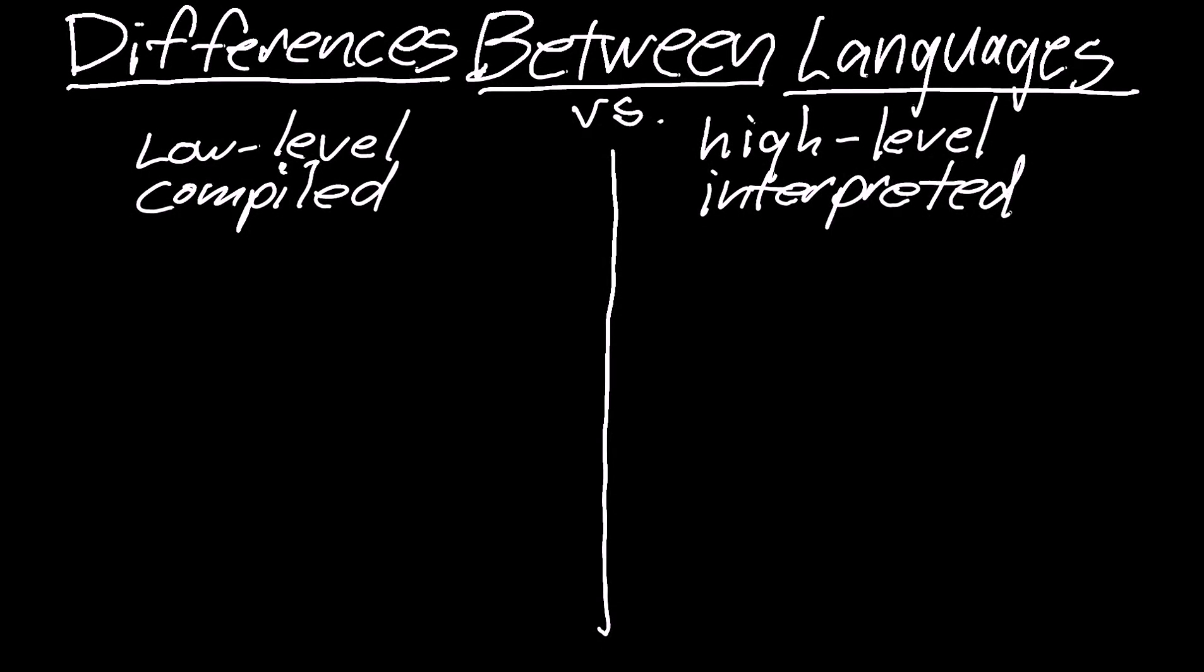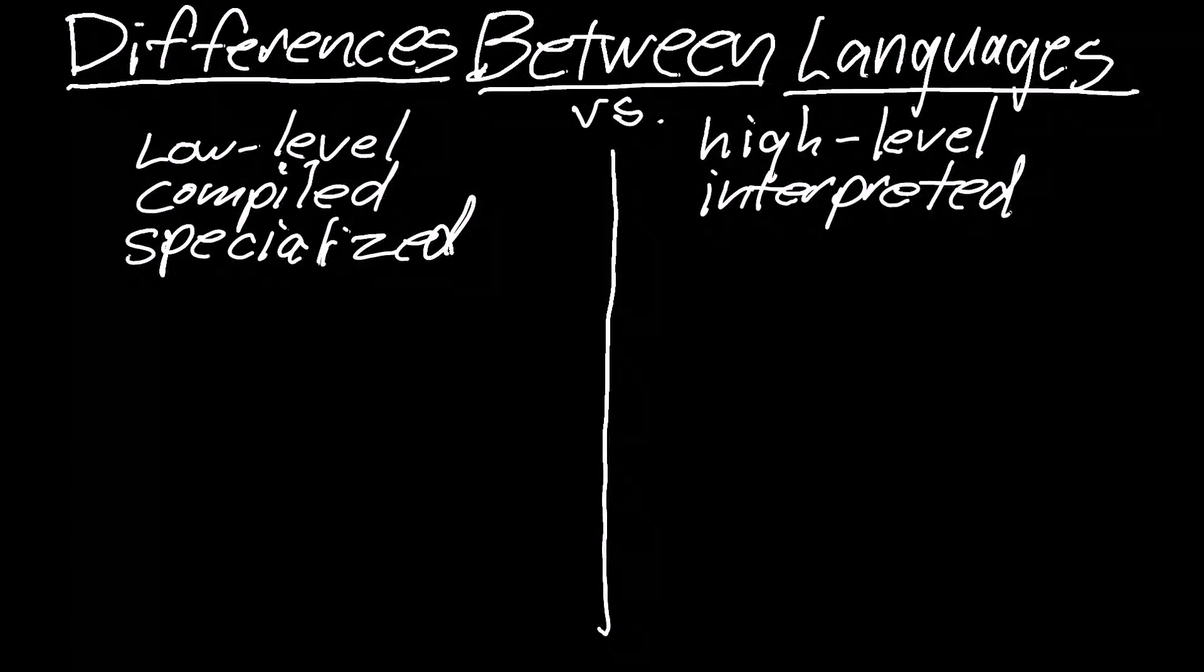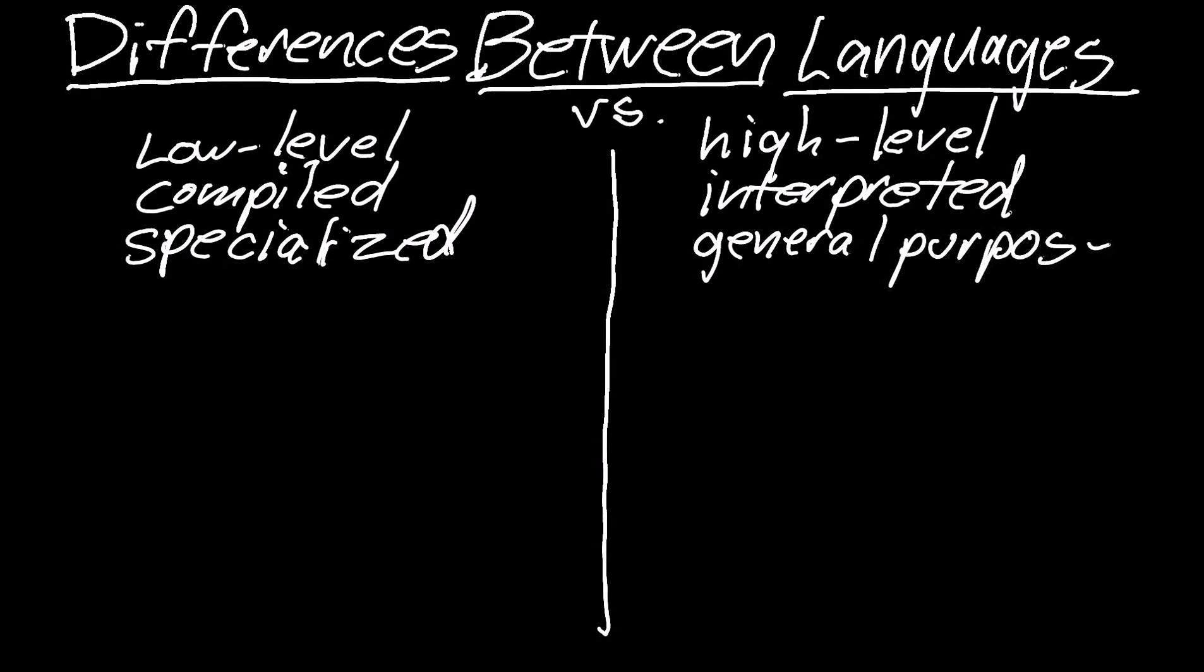The next thing is whether your language is domain-specific, is the industry jargon. But they're just saying whether it's a specialized language. Especially in the early days where they were solving particular problems, a language might be written for scientific number crunching or for business, like Fortran and COBOL respectively, versus more general-purpose languages. We're going to be focusing on general-purpose languages. Those are the ones that you've mostly heard of.